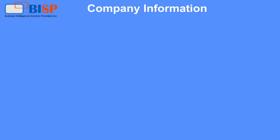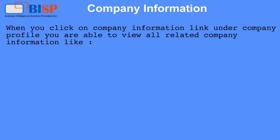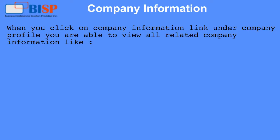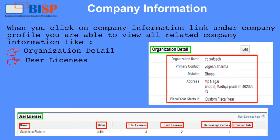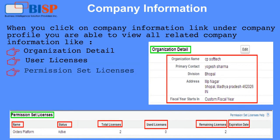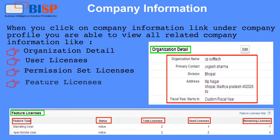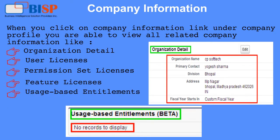Company Information: When you click on the Company Information link on the Company Profile page, you are able to view all related company information like Organization detail, User licenses, Permission set licenses, Feature licenses, and Usage-based entitlements.